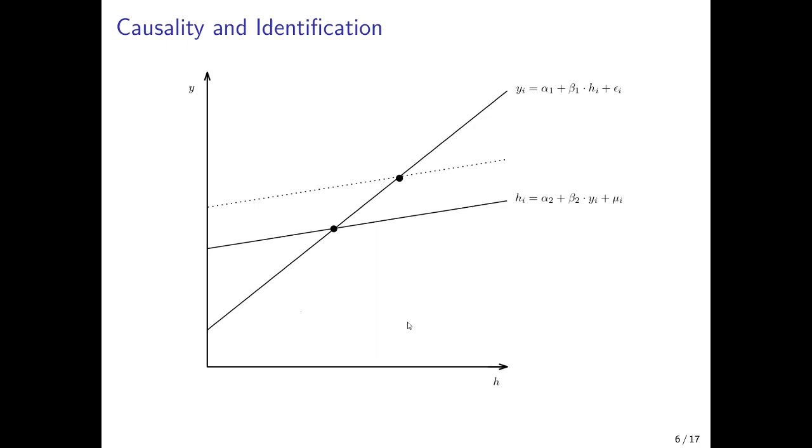For example, this could be this country here and we would have a different intersection between this country's equation that determines health in terms of income and the equation that determines income in terms of health. So we get this data point here.